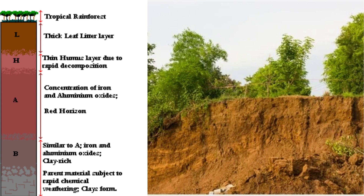Though the soil is able to support the natural vegetation of the area, it is not a very fertile soil. This means that when the trees are removed, the soil is prone to erosion and soil depletion.